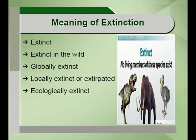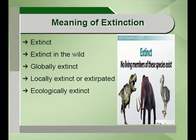The second category is extinct in the wild. It refers to species which are extinct in the wild — not found in the wild — but in captivity through human conservation, they are found in captivity but not in the wild. These two categories together — extinct and extinct in the wild — together form the globally extinct species.